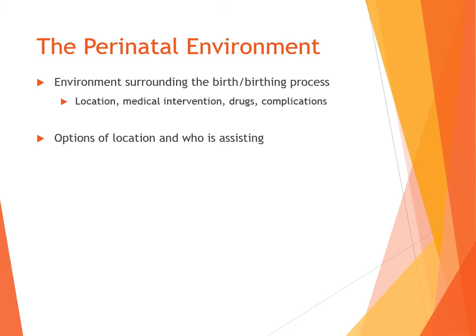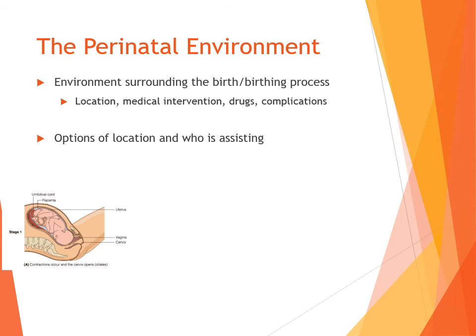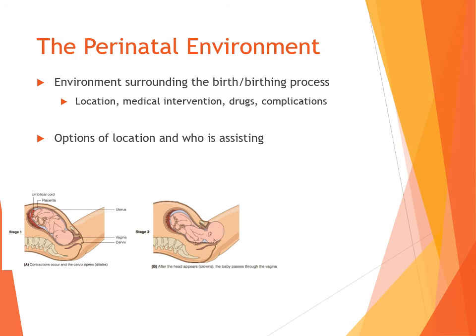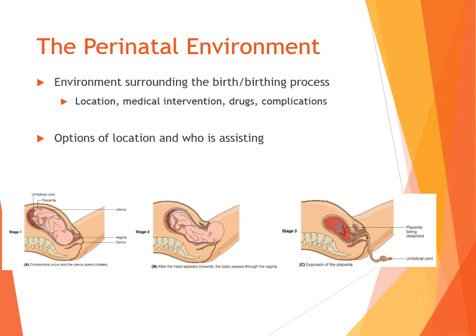In the birthing process, stage one involves the tail end of labor — contractions and the cervix opening to prepare for birth. In stage two, the head appears or crowns and the baby passes through the birth canal. After that, the placenta is detached and expelled through the same birth canal.